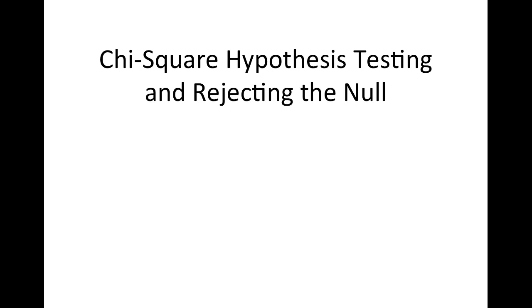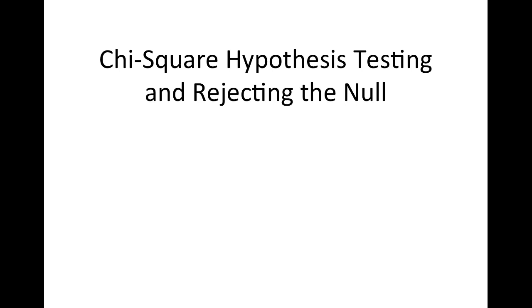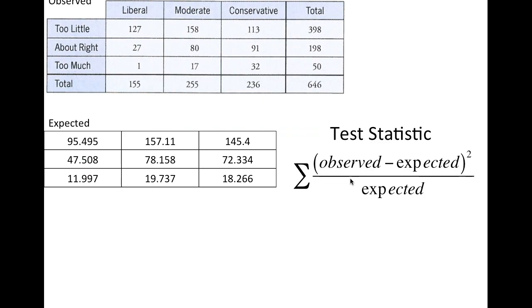It still uses the observed and the expected values, which you should have. We're going to look at the last example we did with the political viewpoint and the thoughts on environmental spending. We did our test statistic — what's happening is we're looking at the difference: how far away is our observed from what we expected for that category. For liberals and 'too little,' we observed 127, and we expected a count of about 95, so the difference between those is what is measured for the test statistic.